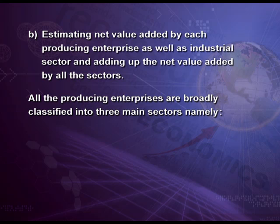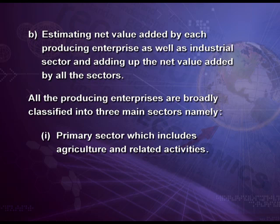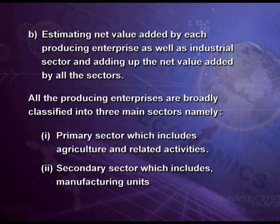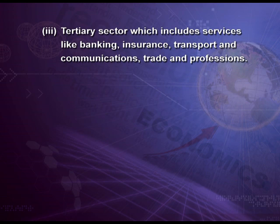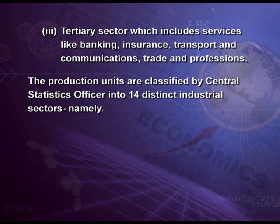All the producing enterprises are broadly classified into three main sectors: namely, the primary sector which includes agriculture and related activities; secondary sector which includes manufacturing units; and tertiary sector which includes services like banking, insurance, transport, communication, trade, and professions. The production units are classified by the Central Statistics Officer, which has classified all industrial sectors into 14 different categories.